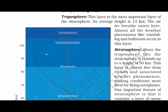Let's quickly read about each layer. Troposphere: the height of the troposphere is 13 km from the ground. It is the layer where oxygen exists, and rainfall, fog, and hailstorms occur in this layer.